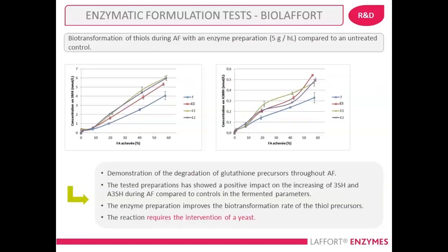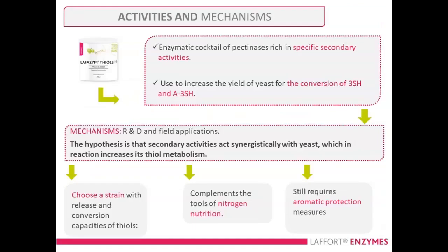Using a thiol-releasing enzyme, you need a thiol-releasing yeast to capitalize on all those precursors. The thiol-enhancing enzyme — Designs Thiols Plus — is a cocktail rich in very specific secondary activities. It works by increasing the amount of precursors available in the juice for conversion by the yeast, specifically for 3SH and A3SH, giving tropical grapefruit, passion fruit aromatics. It doesn't do much for boxwood and grassy aromatics. The hypothesis is that there's synergistic activity with the yeast that could also increase yeast thiol metabolism.